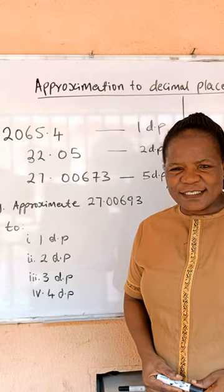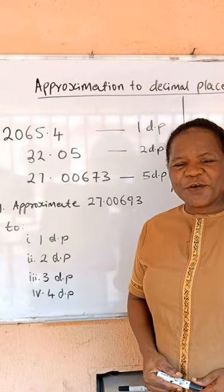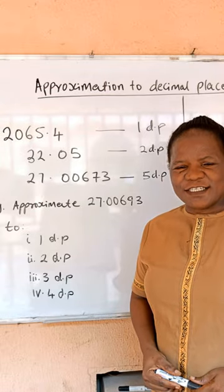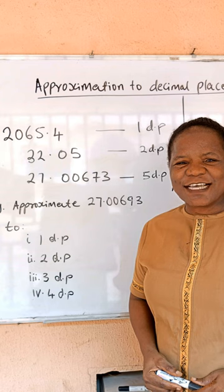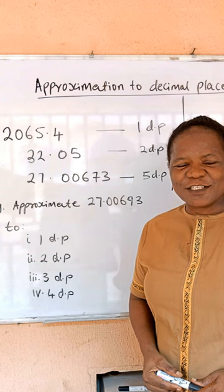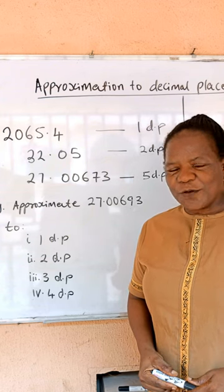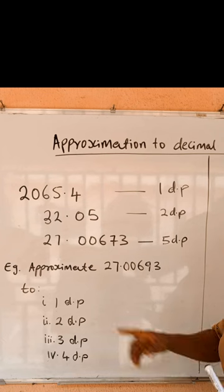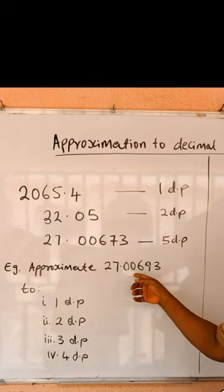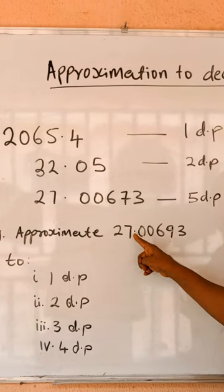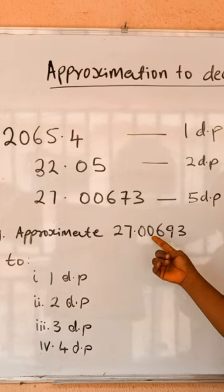The number of decimal places in a figure is the number of digits at the right-hand side of the decimal point. To approximate to one decimal place, you count one digit from the decimal point; if the next digit is not up to five, you leave it as is.